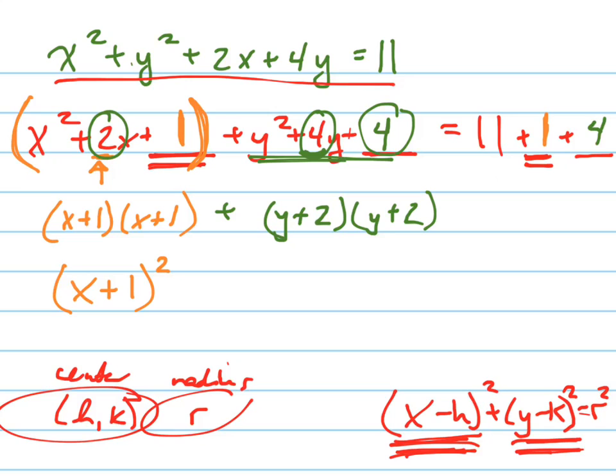So I did half of 2 is 1 and I had to square it because I'm trying to make this thing factor nicely into a perfect square. So what's Y plus 2 times Y plus 2? Y plus 2 squared. And what does that all equal?